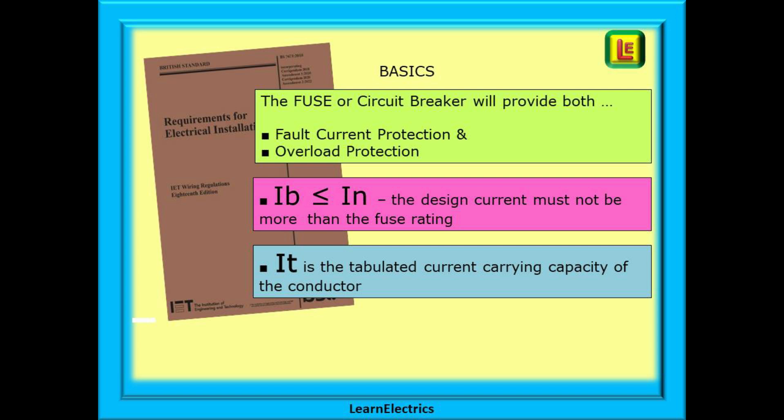IB, the designed current, must be known first, and it must not be more than IN, the fuse rating. Find IB and then choose IN. And IT is the tabulated current carrying capacity of the conductor, which we calculate once we know IN, the rating of the fuse or breaker.